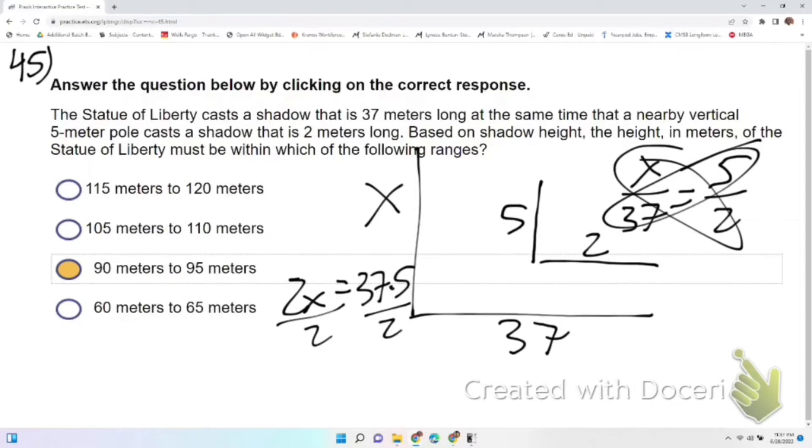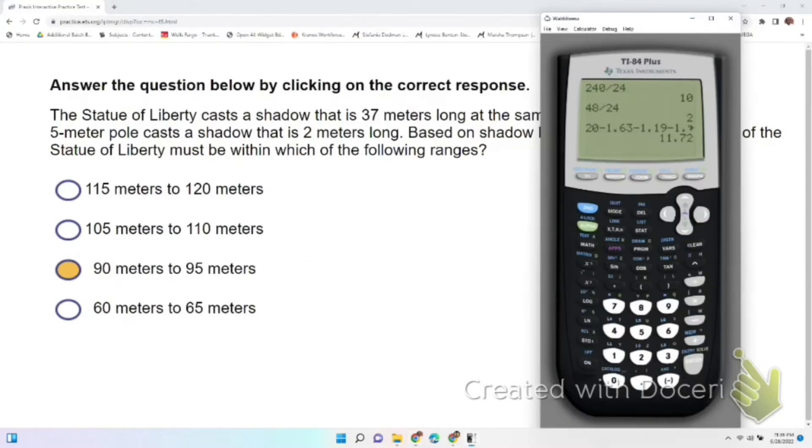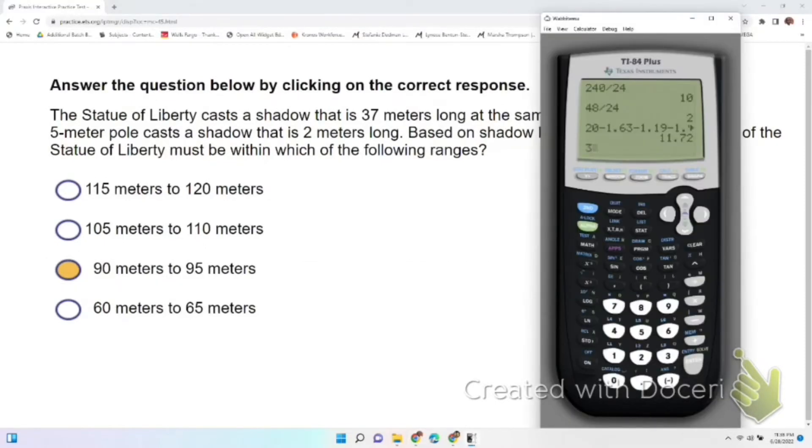We're going to divide by 2. So x equals 37 times 5 divided by 2. 37 times 5 divided by 2, so it's 92.5, which is in between 90 and 95 meters.